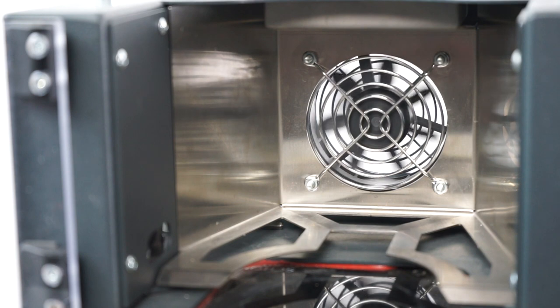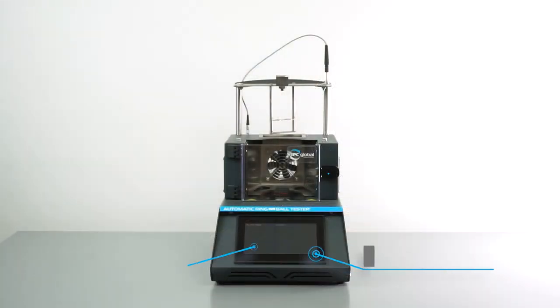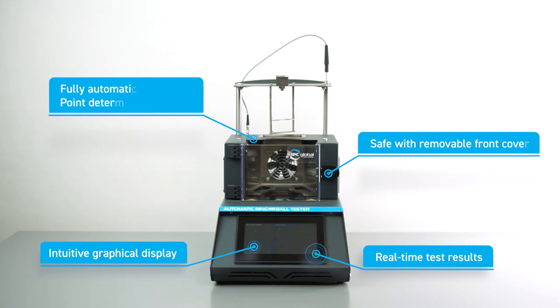The automatic ring and ball tester is your perfect instrument to safely and automatically perform the softening point determination of binders according to the most common international standards.